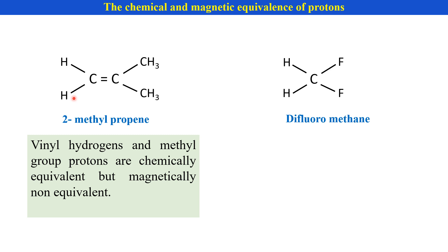For the same reason, the coupling of HA with the methyl group and the coupling of HA' with the methyl group is not the same — it is a cis coupling and it is a trans-coupling. Therefore, these are chemically equivalent but magnetically non-equivalent. The vinyl hydrogens and methyl group protons are chemically equivalent but magnetically non-equivalent.